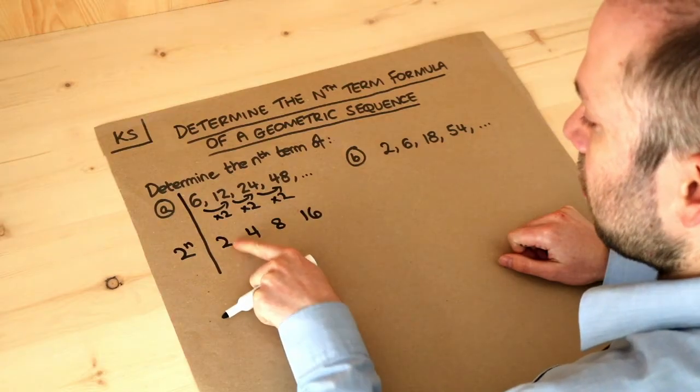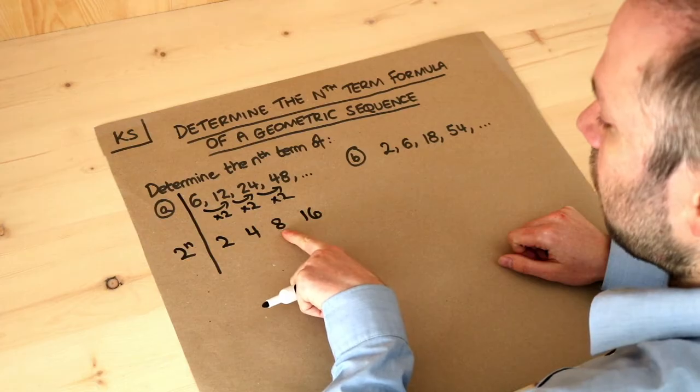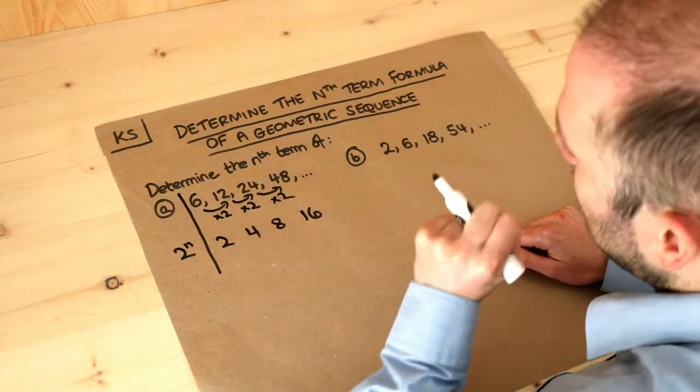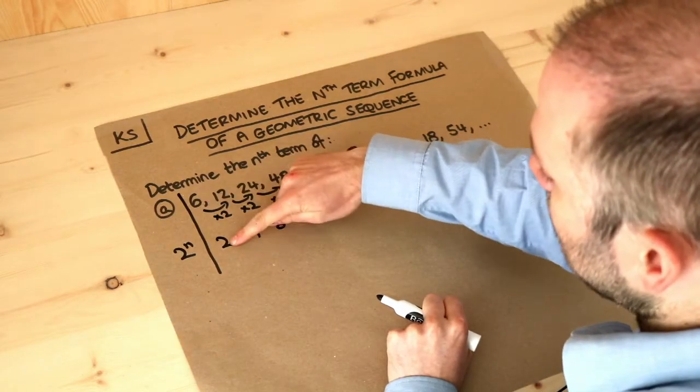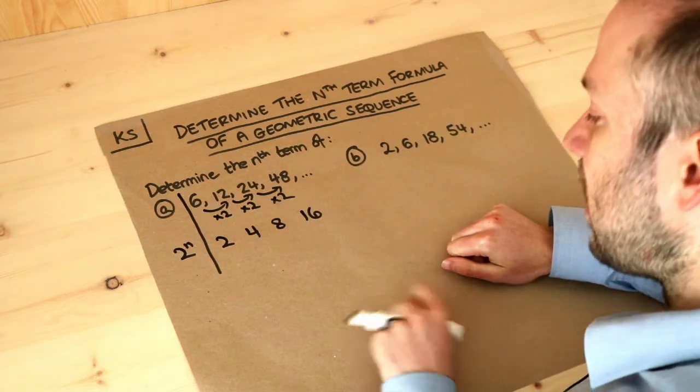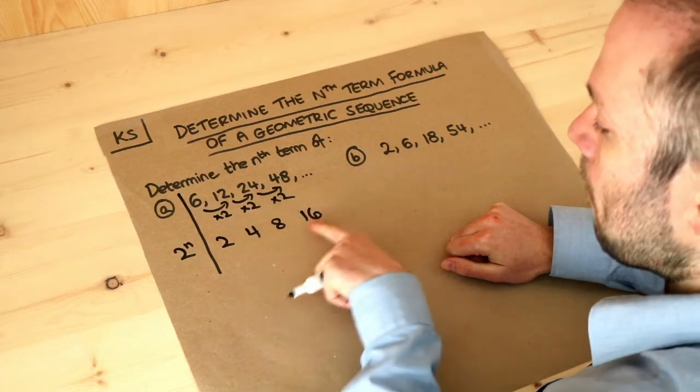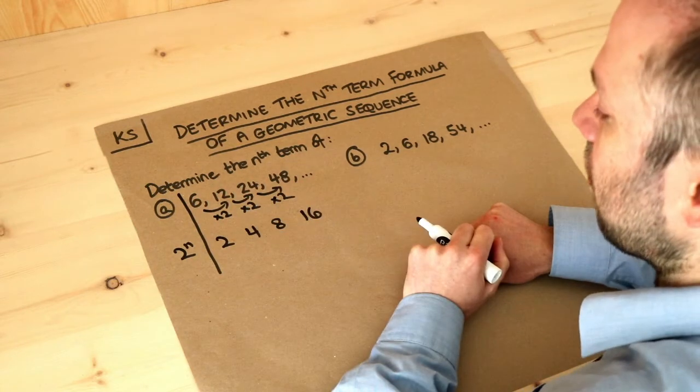What could you do to 2 to get to 6? What could you do to 4 to get to 12? What could you do to 8 to get to 24? But the same thing in every case. Can you see that 6 is 3 times bigger than the 2? That 12 is 3 times bigger than the 4. So all we need to do is multiply each number by 3 and that will fix it and give us the sequence we want.